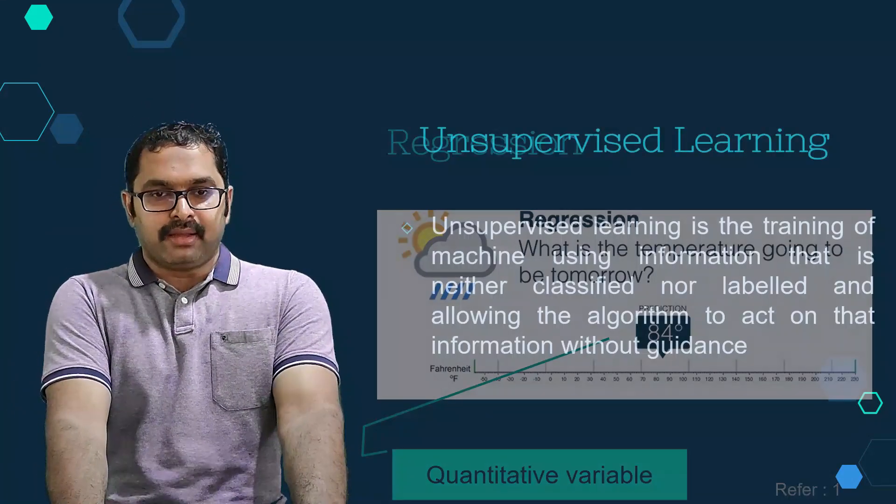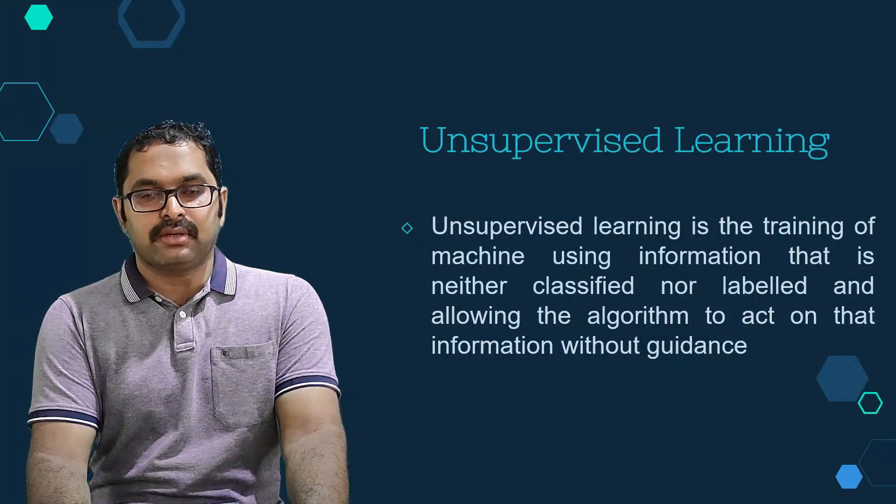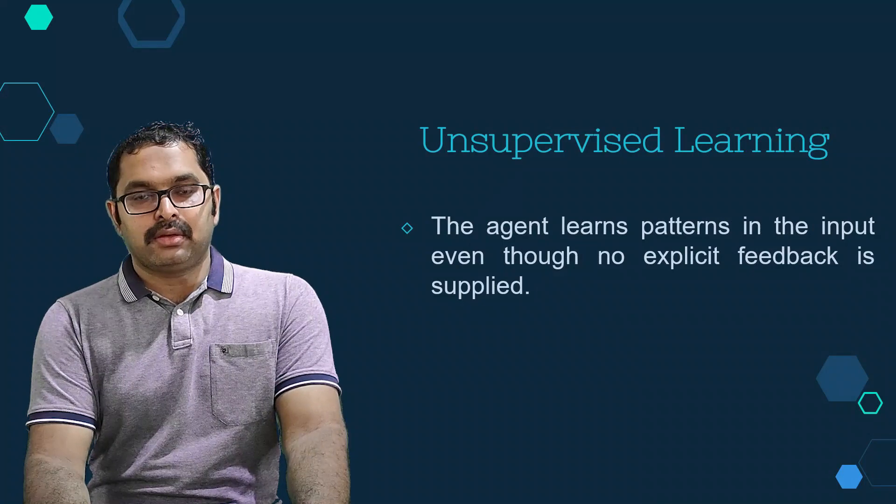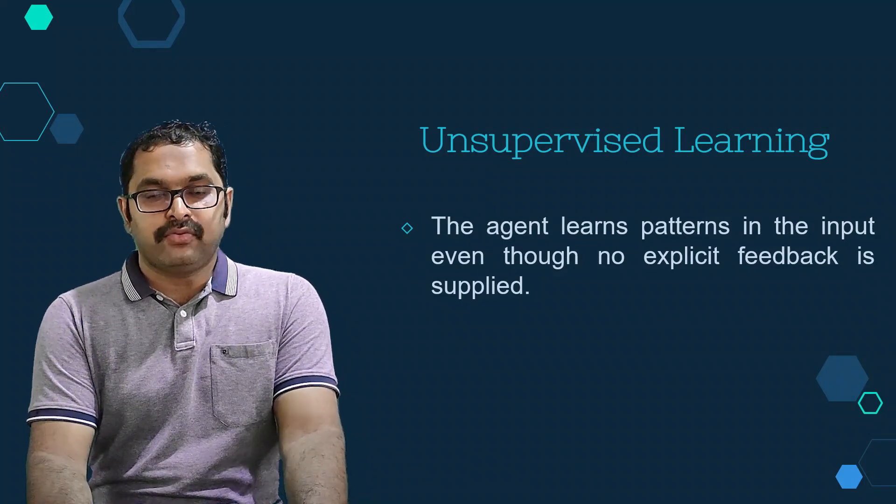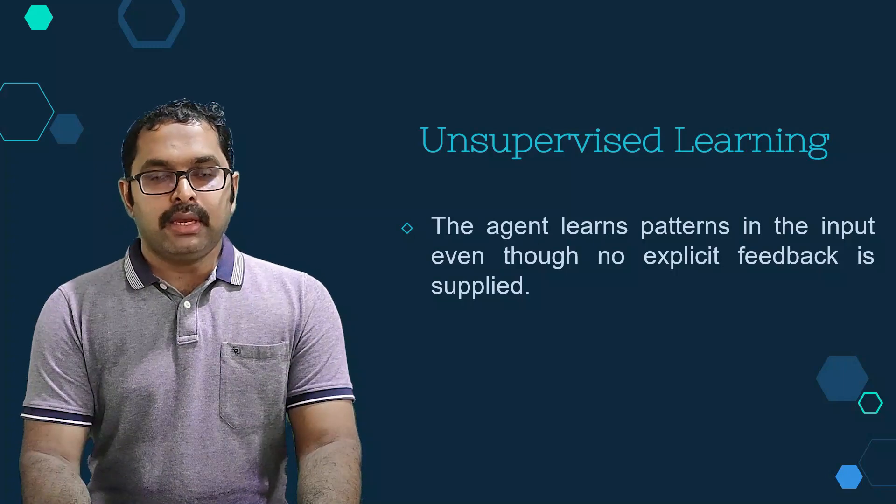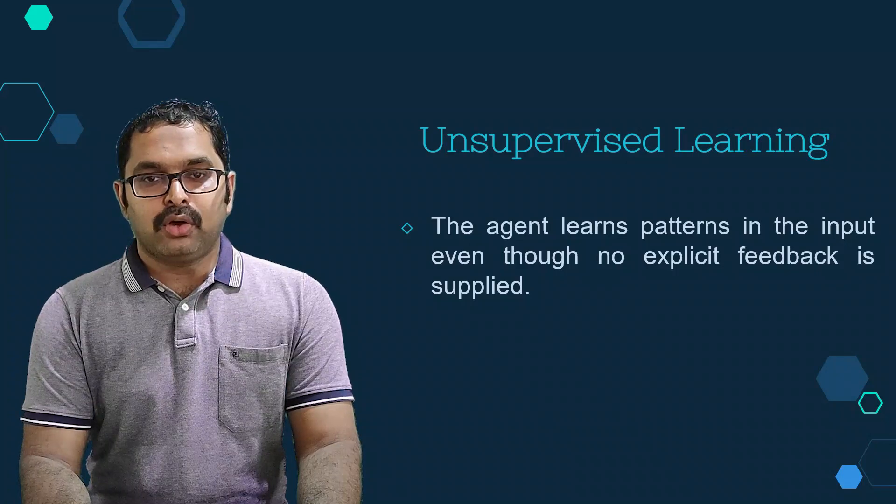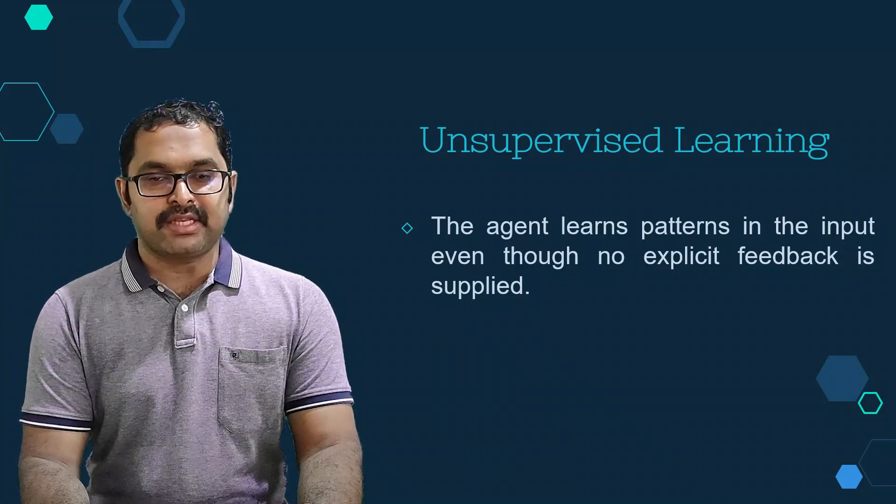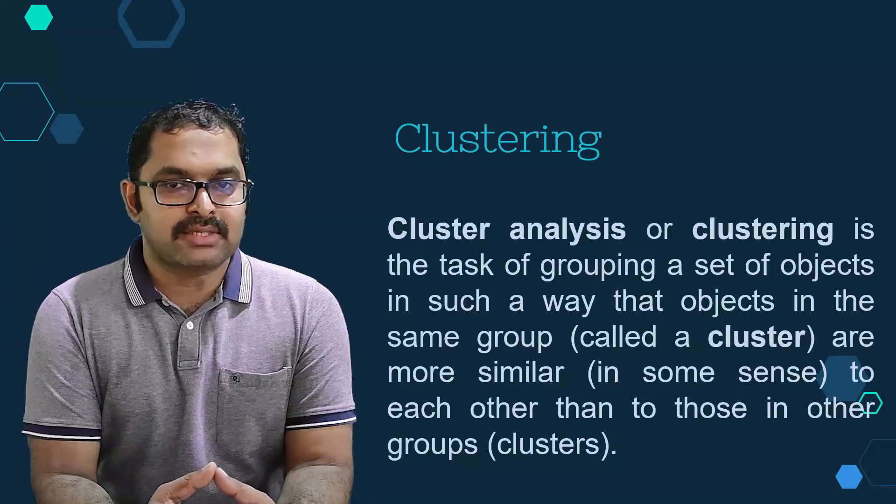Coming to unsupervised learning: unsupervised learning is the training of machines using information that is neither classified nor labeled and allowing the algorithm to act on that information without any guidance. In unsupervised learning, the agent learns patterns in the input even though no explicit feedback is provided. The most common unsupervised learning task is clustering.